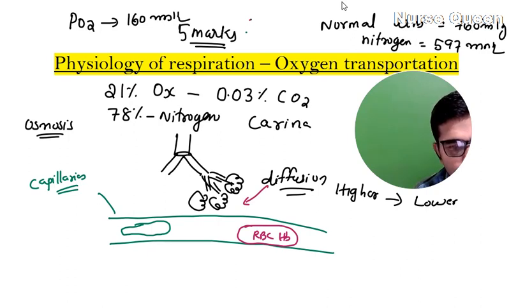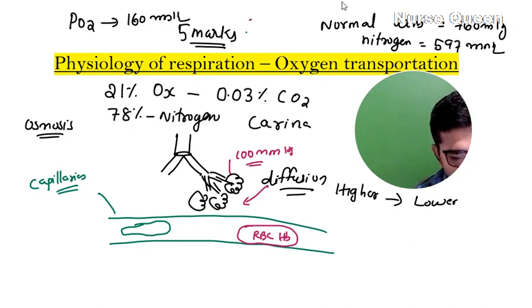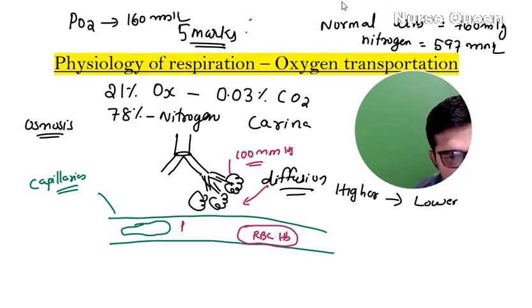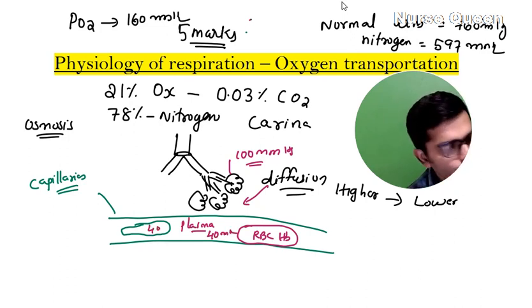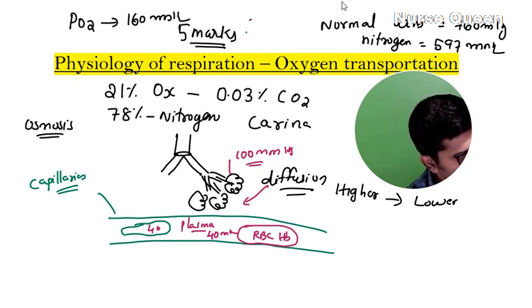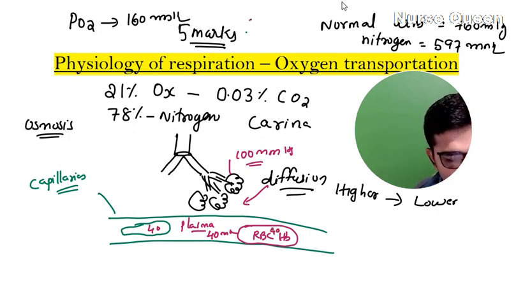Oxygen in alveoli is 100 mmHg. The pressure already present in plasma is 40 mmHg. Capillaries are thin blood vessels.